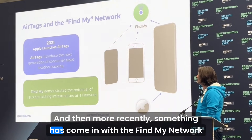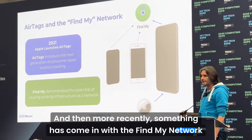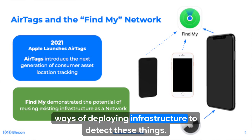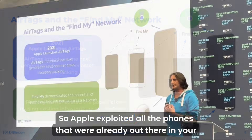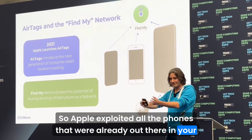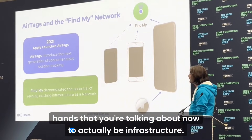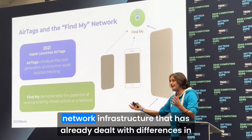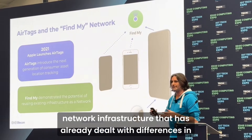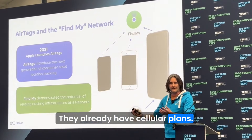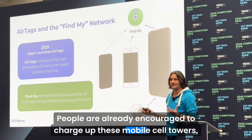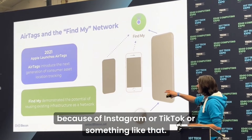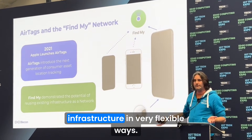More recently, the Find My network from Apple has really helped people imagine different ways of deploying infrastructure to detect these things. Apple exploited all the phones already out there to actually be infrastructure — a very cost-effective way of deploying a network that has already dealt with different countries, has cellular plans, and where people are already motivated to keep those mobile devices charged. This has really demonstrated the power of being able to deploy infrastructure in very flexible ways.